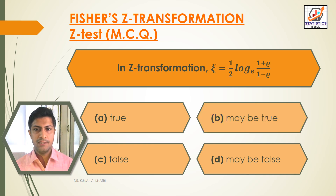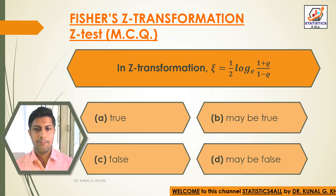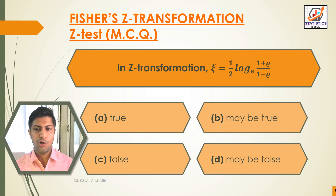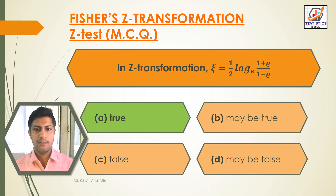Next question. In Z-Transformation, xi is equal to half log of (1 plus rho) divided by (1 minus rho), to the base E. Option A: True. Option B: May be true. Option C: False. Option D: May be false. Here we have the answer: Option A, True.